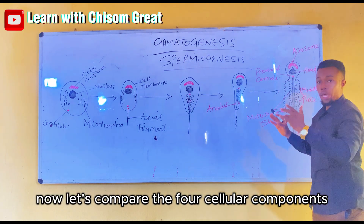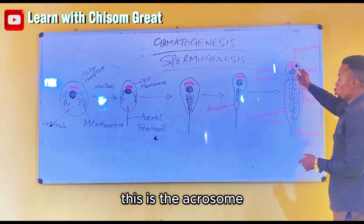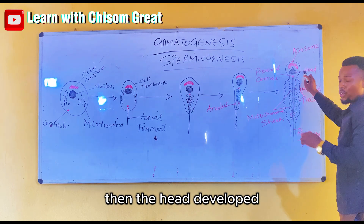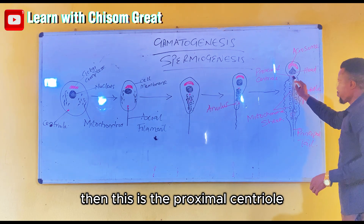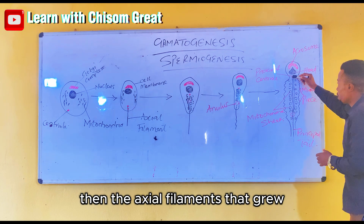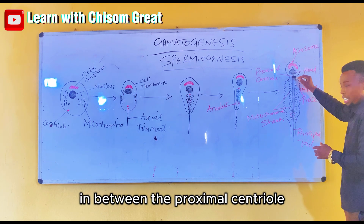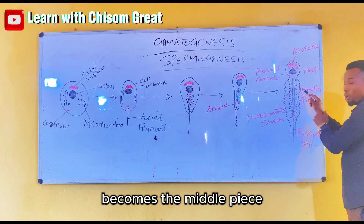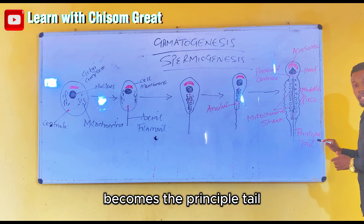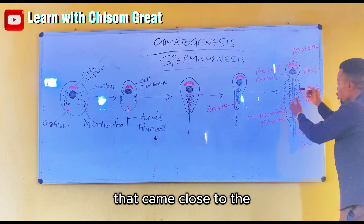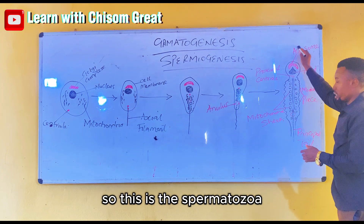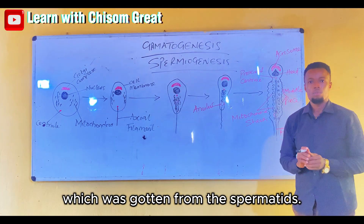Comparing the four spermatozoon components: the acrosome is derived from the Golgi complex; the head is derived from the nucleus; this is the proximal centriole, and this is the distal centriole that goes right to the annulus. The axial filaments that grew in between the proximal centriole and the annulus, together with the mitochondria, becomes the middle piece. The axial filaments that grew from the annulus downward becomes the principal piece. The mitochondria that came close to the axial filaments give rise to the mitochondrial sheath. So this is the spermatozoon, gotten from the spermatid.